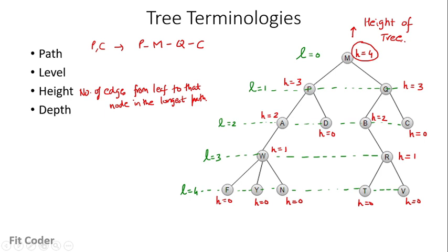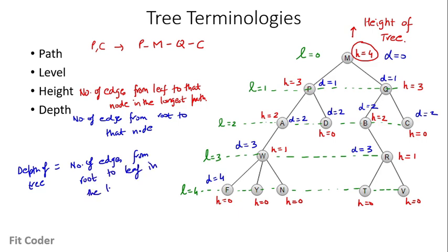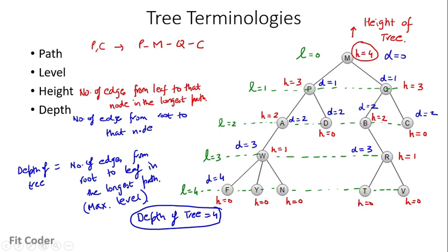The next term is depth — the number of edges from the root to that node. The root node is at depth 0, the next level is at depth 1, then depth 2, and so on. W and R are at depth 3, and the last nodes are at depth 4. The depth of the tree is the number of edges from root to leaf in the longest path, or equivalently the maximum level — so for this tree, depth is also 4. These are the important terms to keep in mind in order to understand tree data structures.